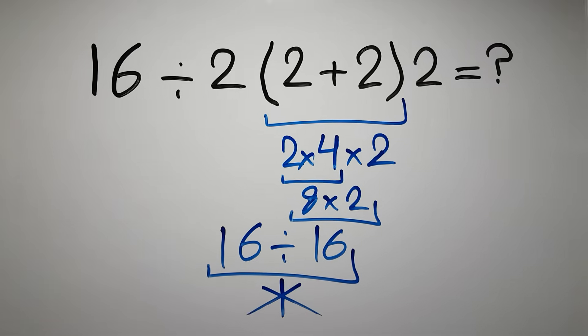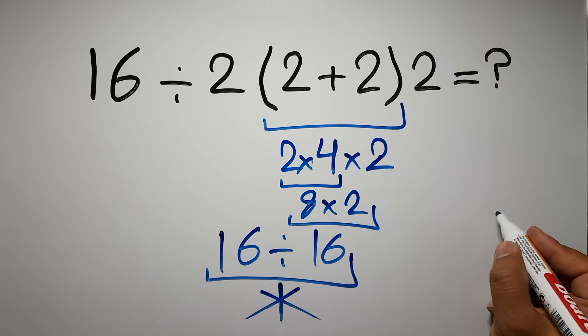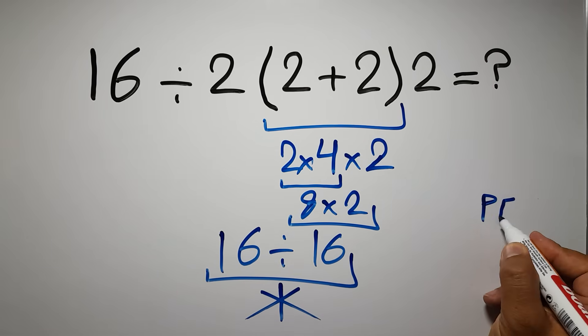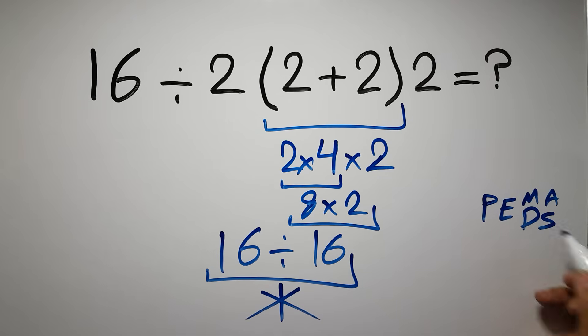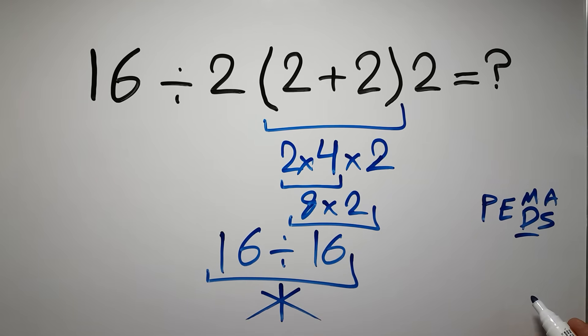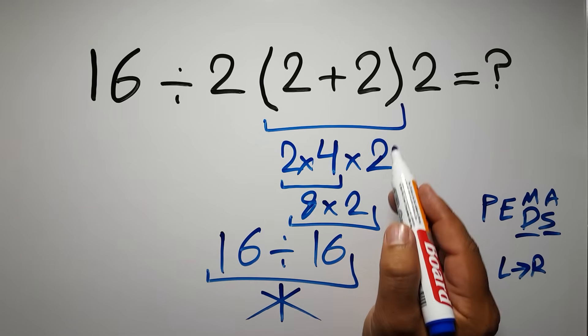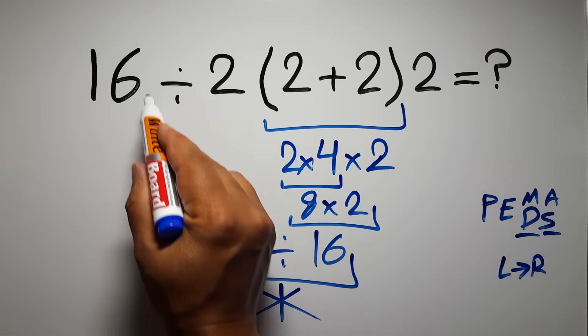answer is not correct. According to the order of operations, first we have to do parentheses, then exponents, then multiplication or division, and finally addition or subtraction. Remember that multiplication and division have equal priority, and we have to work from left to right. The same applies to addition and subtraction. In this expression, we have one division,